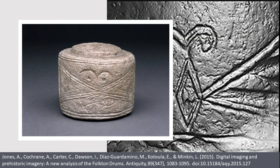Folkton drums are made of chalk and date from the Neolithic period, depicting stylized human faces and geometric patterns. RTI revealed evidence for previously unrecorded motifs, erasure and reworking. Folkton drums were successively carved and re-carved over time, which is a very common practice in the making of artefacts, but is often difficult to identify using conventional methods.